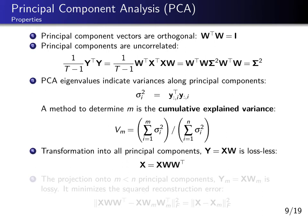If we choose M equals N — no dimension reduction, using all principal components — then PCA is lossless. Projecting onto all principal component vectors as XW, then lifting back with W transposed, and since W W transposed is the identity matrix, we recover the original data. So PCA without removing components is just a basis transformation that loses no information.